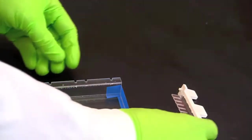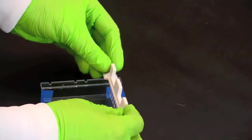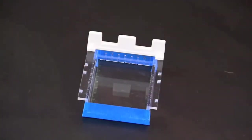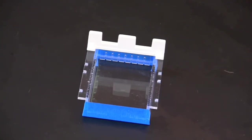Next place the comb into the comb guides on the gel tray. If you plan to run DNA samples the comb should be placed at one end of the gel tray. Place the tray with comb on a flat and level surface.